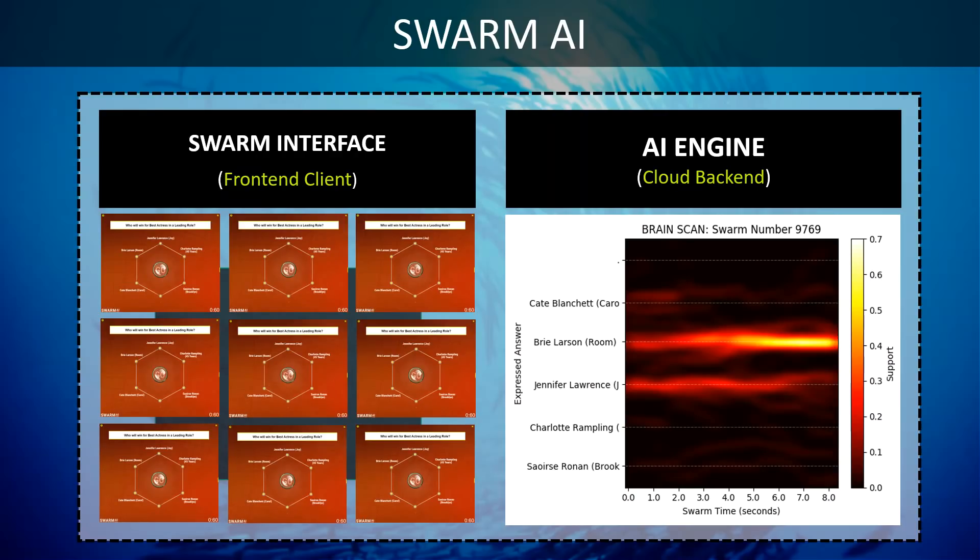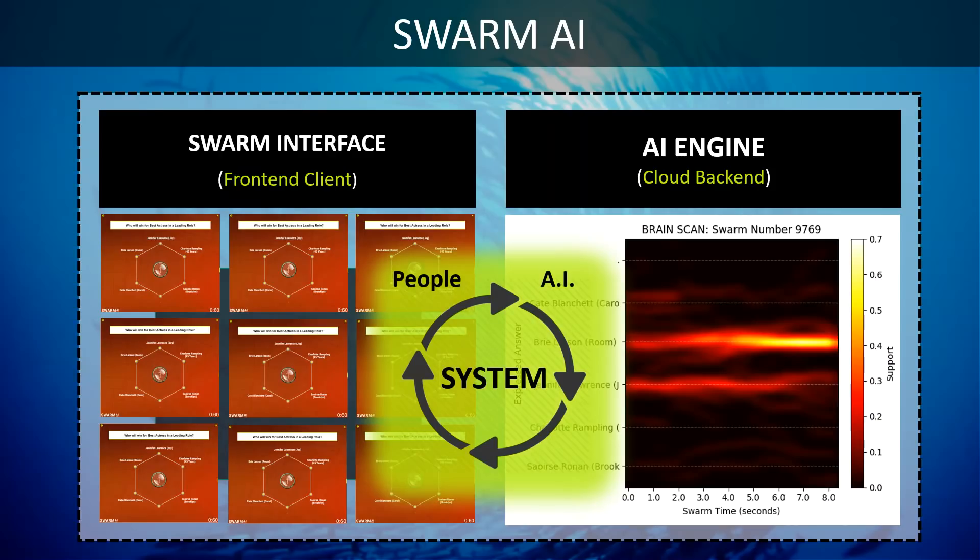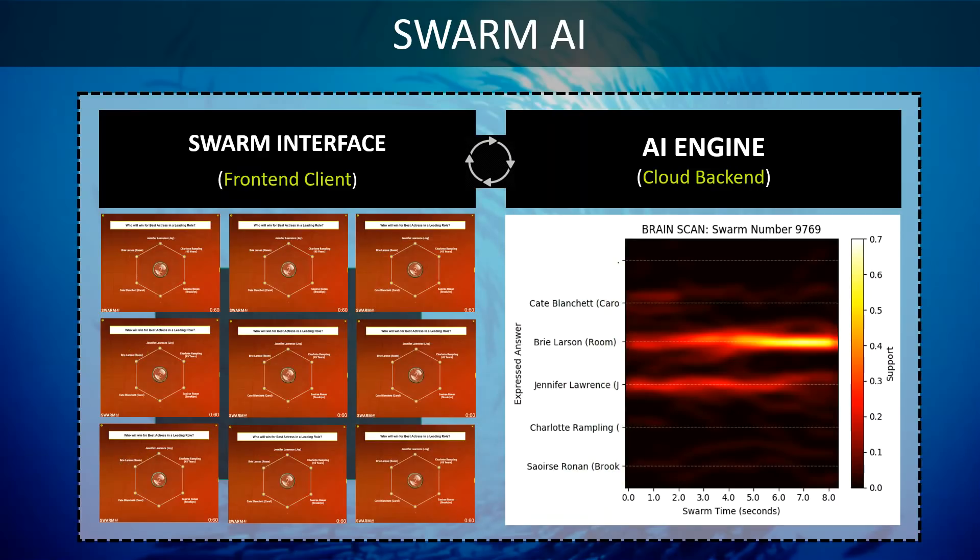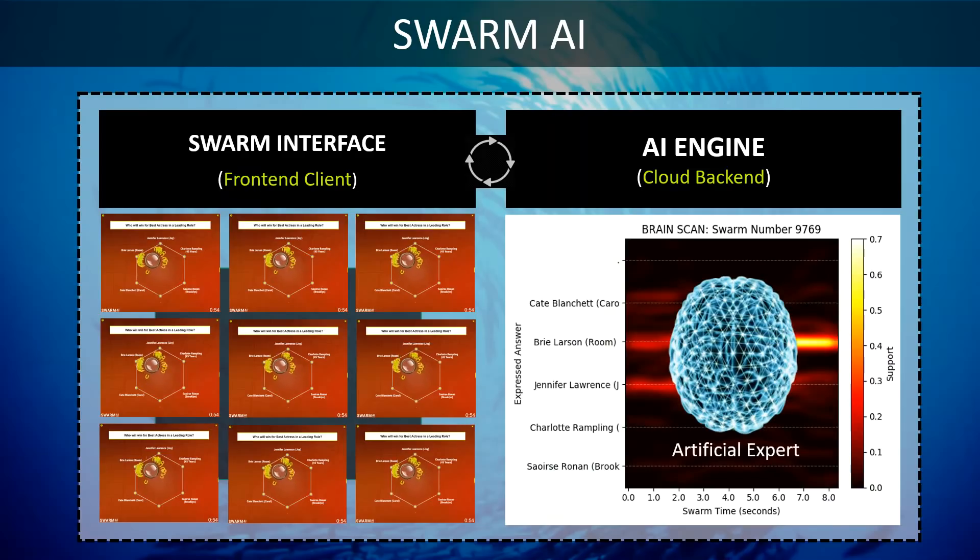The key thing to understand is that this is a system with feedback loops, where the behaviors of the people influence the AI, and the AI influences the behaviors of the people. Together they're behaving as an artificial expert that's deliberating like any intelligence would by weighing the alternatives, evaluating the options, making trade-offs and converging on the best solution. And so this is how we represent the Swarm AI system, with feedback loops between the Swarm clients and the AI backend creating an artificial expert.